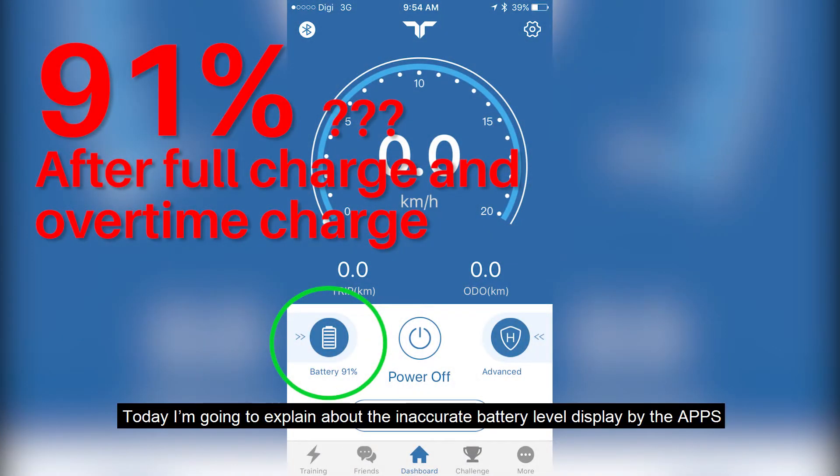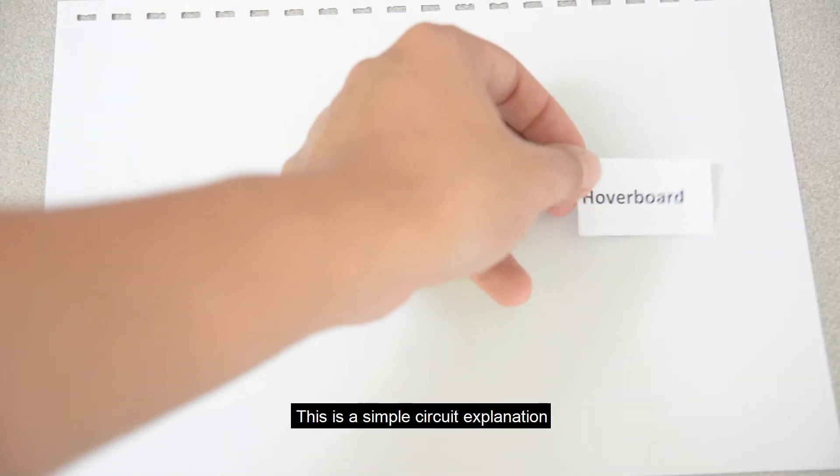Hi, I'm Alan. Today I'm going to explain about the inaccurate battery level displayed by the apps. This is a simple circuit explanation.